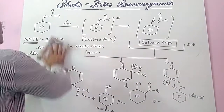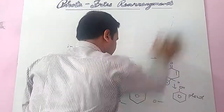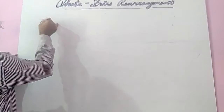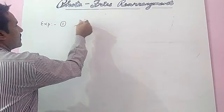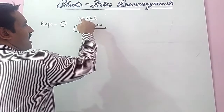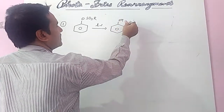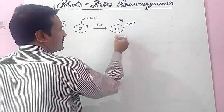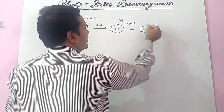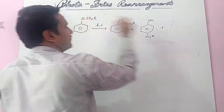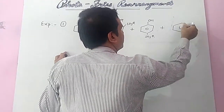A few other compounds also show this type of Photo-Fries rearrangement. Example one: if a phenolic ester with an SO3R group absorbs light, then similar products are formed — the acyl group migrates to ortho and para positions. So we get ortho product with OH and SO3R, and para product with OH and SO3R, and the third product is the free phenol through the solvent cage pathway.